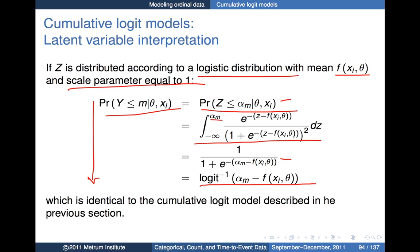Before going through an example, let me see if there are any questions. I realize it can take a little while to get your head around cumulative logit models the first time. I see nothing popping up yet, so I'll start moving on but keep my eye open for anything that might crop up.